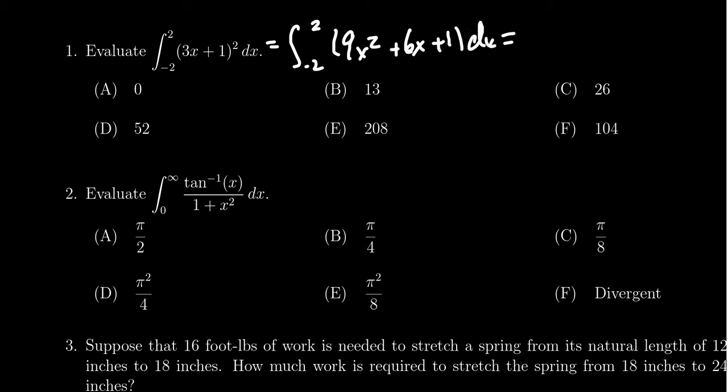Compute an antiderivative. When you take the antiderivative of the 9x squared, you're going to get 9x cubed over 3 plus 6x squared over 2 plus x, as you go from negative two to two.